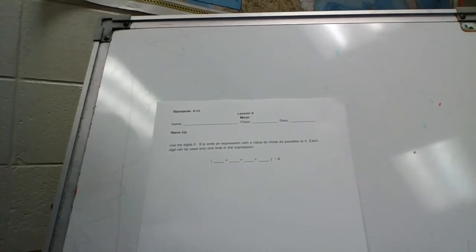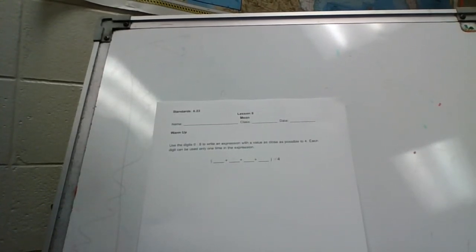I hope everybody can see this. Use the digits 0 to 9 to write an expression with a value as close as possible to 4. Each digit can only be used one time in the expression.